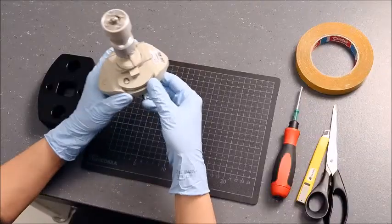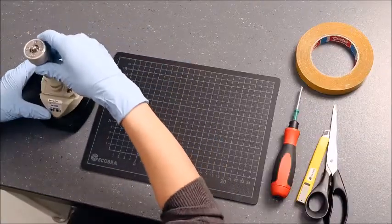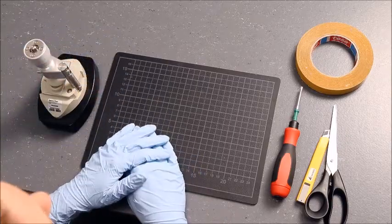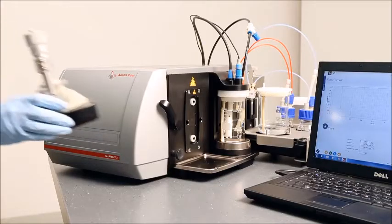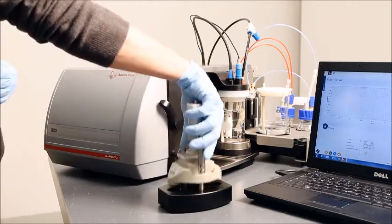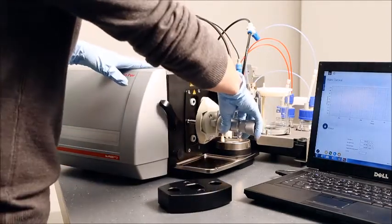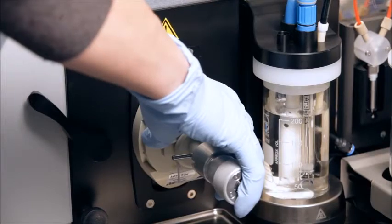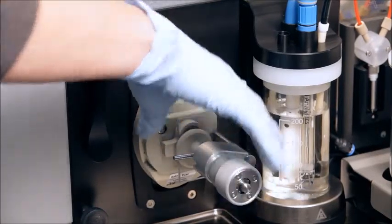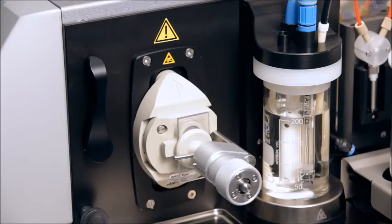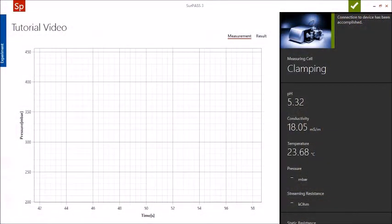Now you can mount the measuring cell on the instrument. Simply plug in the cell and lock it by turning the lever to an upright position. The clamping cell is then recognized by the SURPASS-3 software.